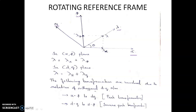Depending upon our application, we choose the appropriate reference frame. Alpha and Beta are stationary, while the D and Q axes form a rotating reference frame.